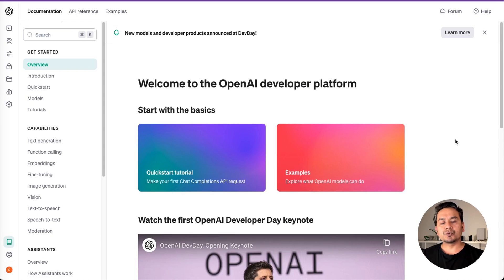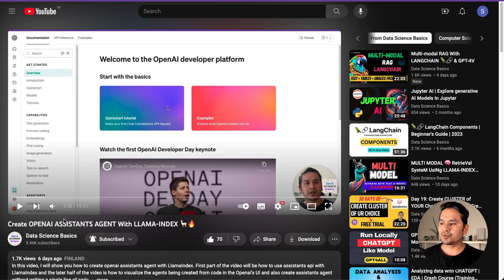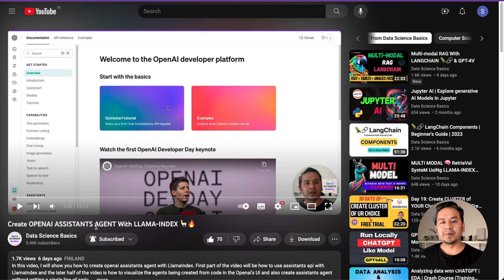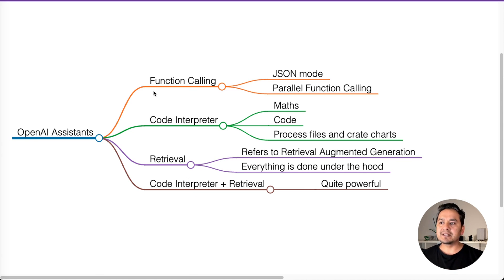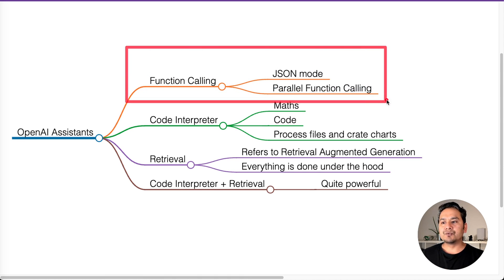Hello guys, welcome back. Let's go through the OpenAI assistant in depth in this video. In the last video, I showed you how you can create the OpenAI assistant agent with LlamaIndex and also I showed you how you can do with the core and how that is reflected in the OpenAI UI. In this video, let's go through some of the things I had already covered but in depth. I will show you a simple example of function calling and also how you can use parallel function calling, because based on the query, the function can be called in parallel now.